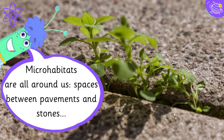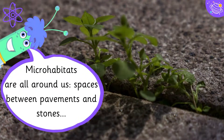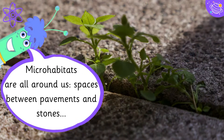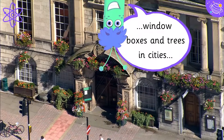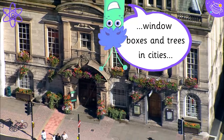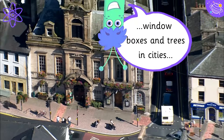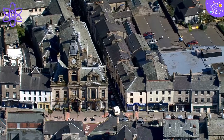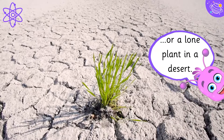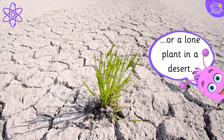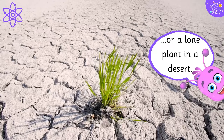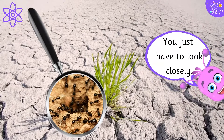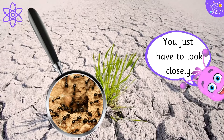Micro-habitats are all around us: spaces between pavements and stones, window boxes and trees in cities, or a lone plant in a desert. You just have to look closely.